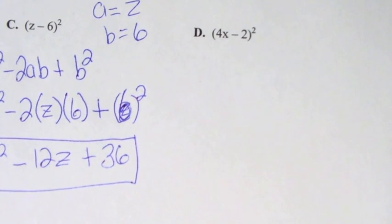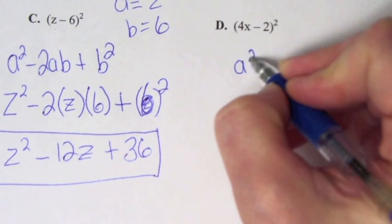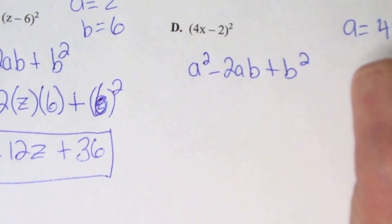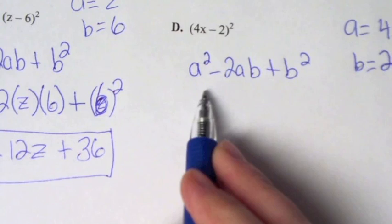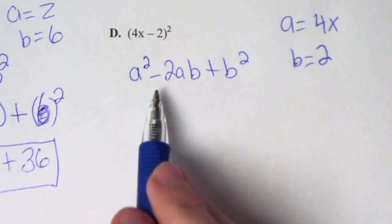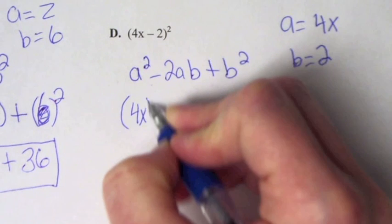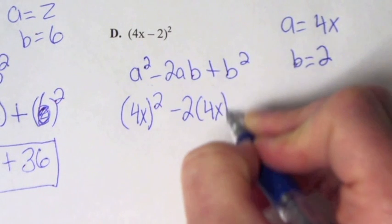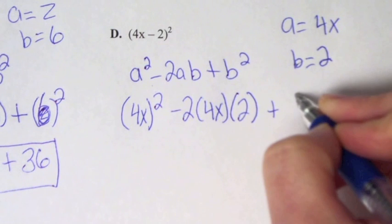Let's use the formula on another one. This is also in the form (a - b) squared, so we use a squared minus 2ab plus b squared. Our a is 4x and our b is 2. Don't use the negative sign for b — the formula takes care of the sign for you. So we have (4x) squared minus 2 times 4x times 2.